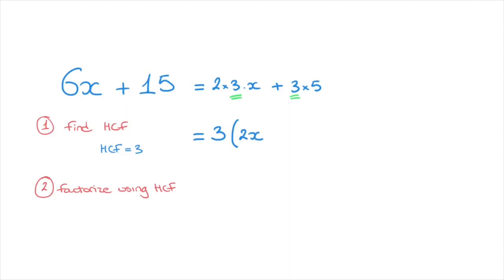We now make a note of the operation between the two terms. In this case, they're being added, so I write a plus sign in the parentheses. Finally, we look at the second term and we can see that the only factor that hasn't been underlined is 5. So I write that in those parentheses and close them. That gives us 3 times, in parentheses, 2x plus 5.